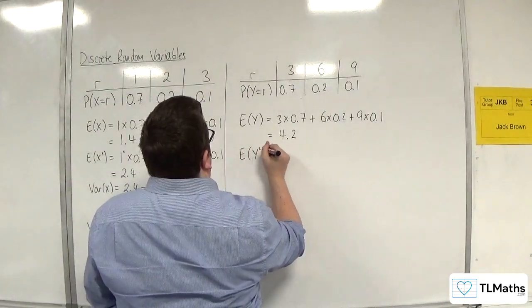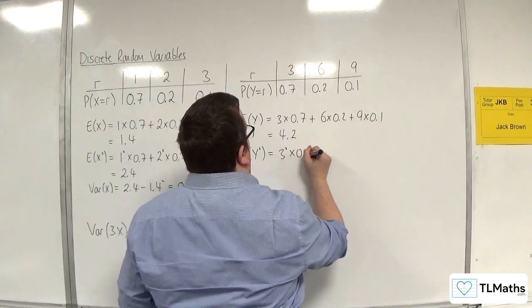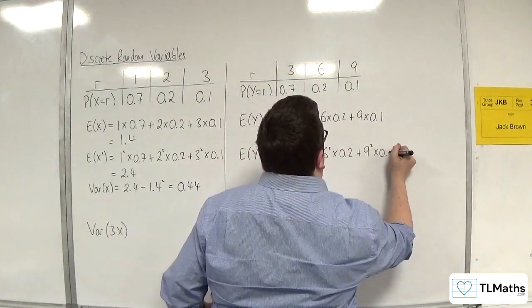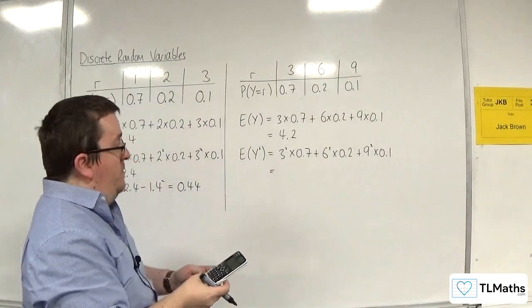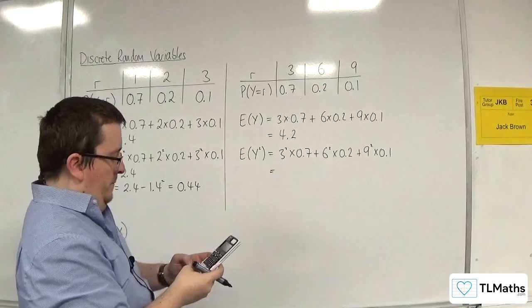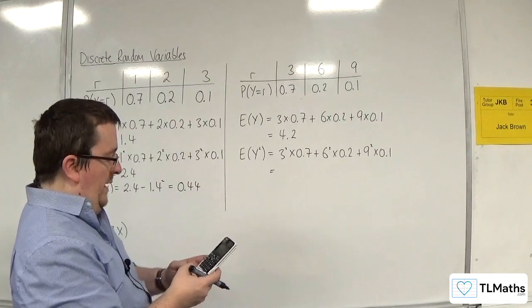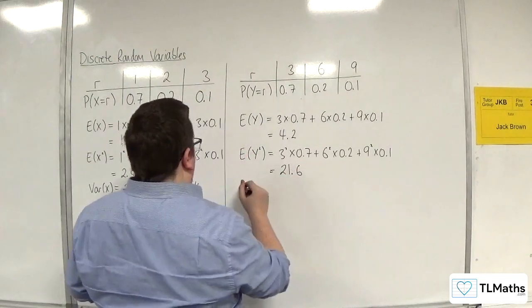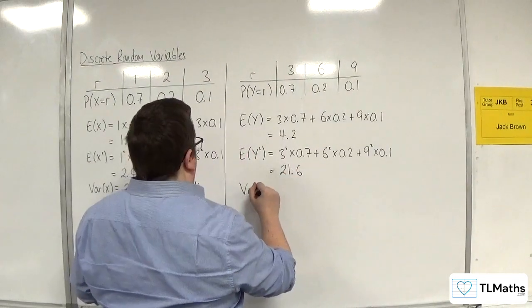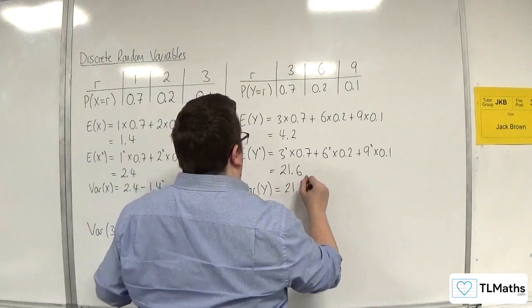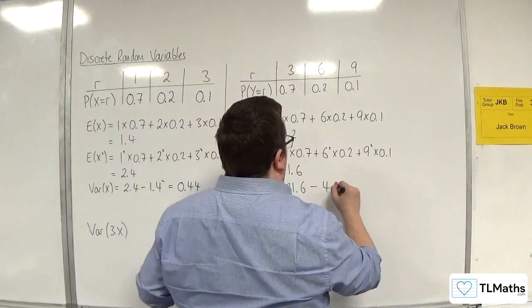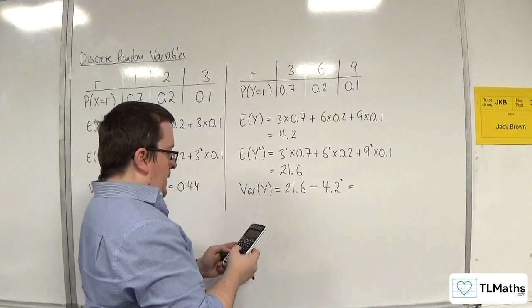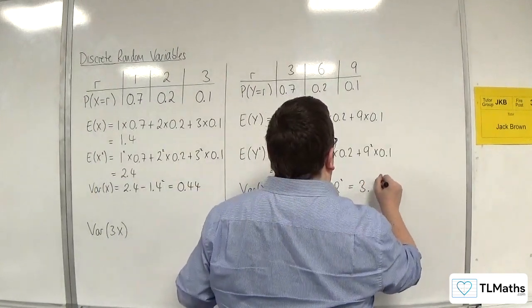E of y squared is 3 squared times 0.7, plus 6 squared times 0.2, plus 9 squared times 0.1. So 9 lots of 0.7, plus 36 lots of 0.2, plus 81 lots of 0.1, and we get 21.6. So var of y is 21.6, take away 4.2 squared, and that gets me 3.96.